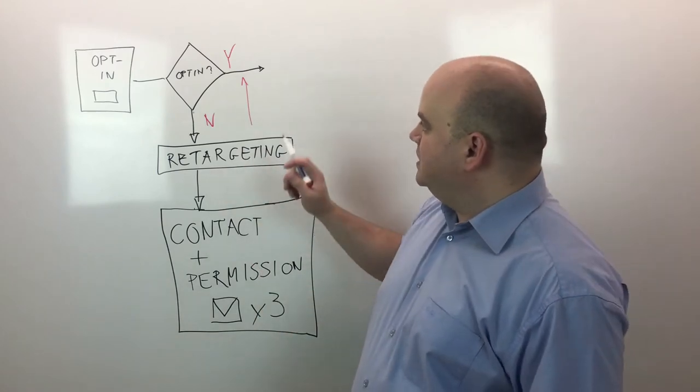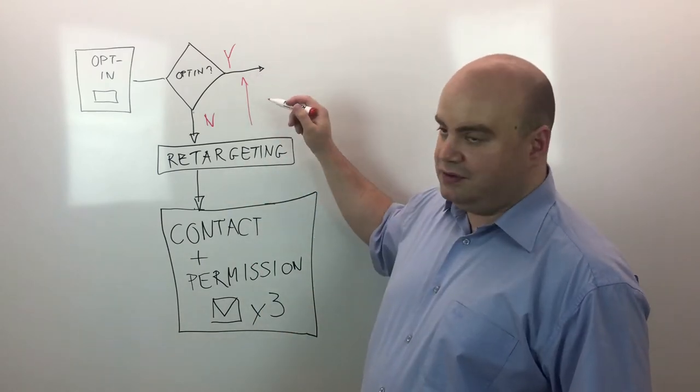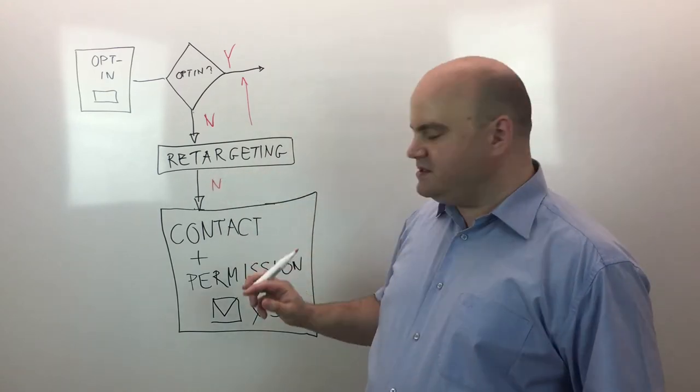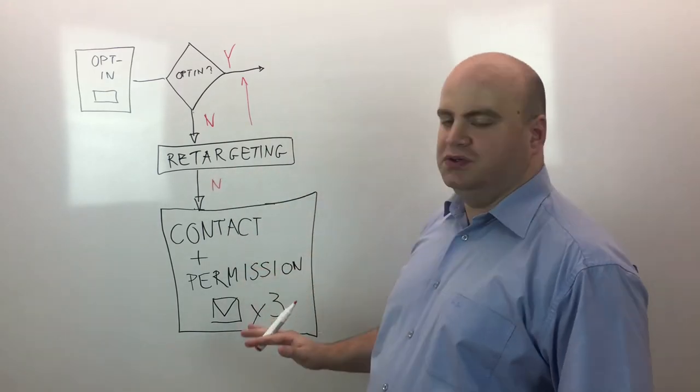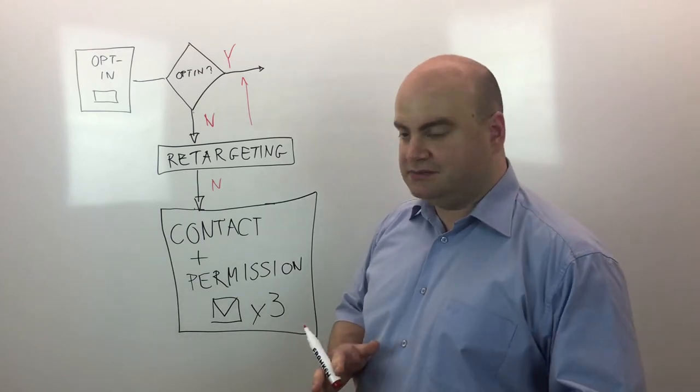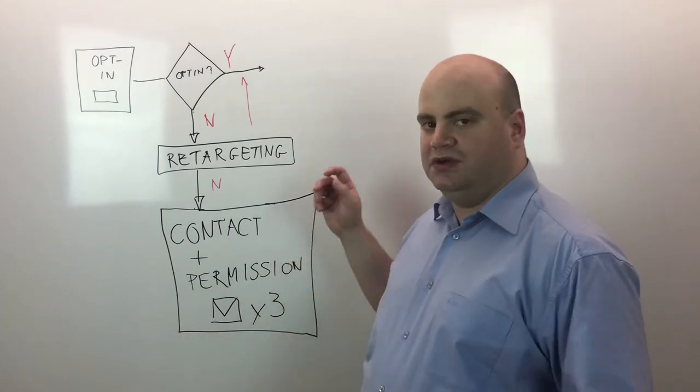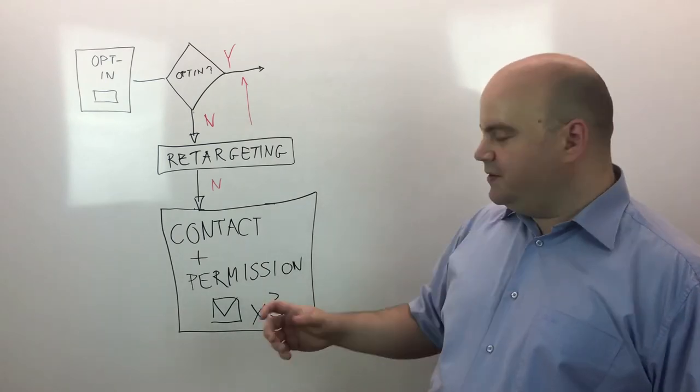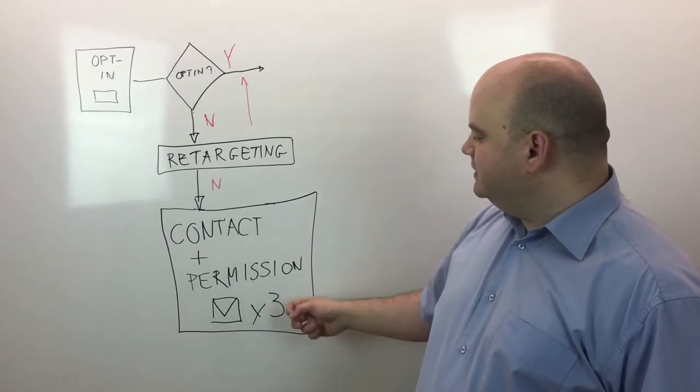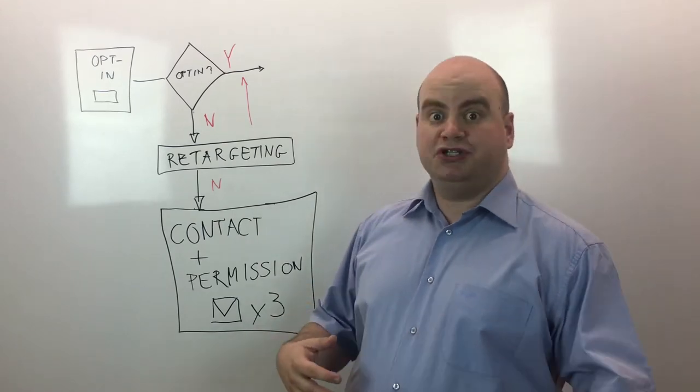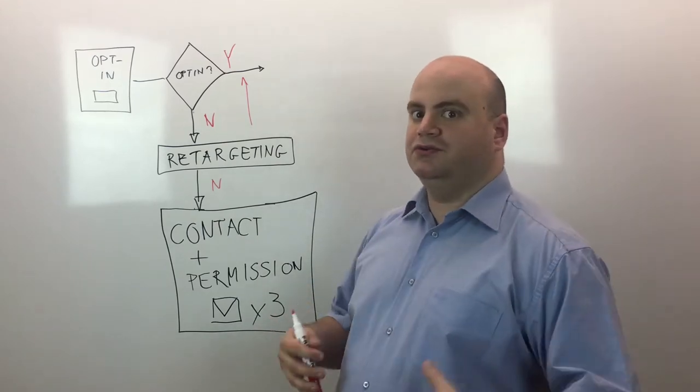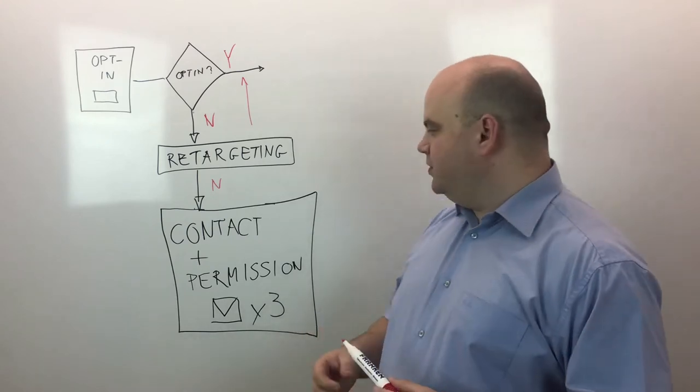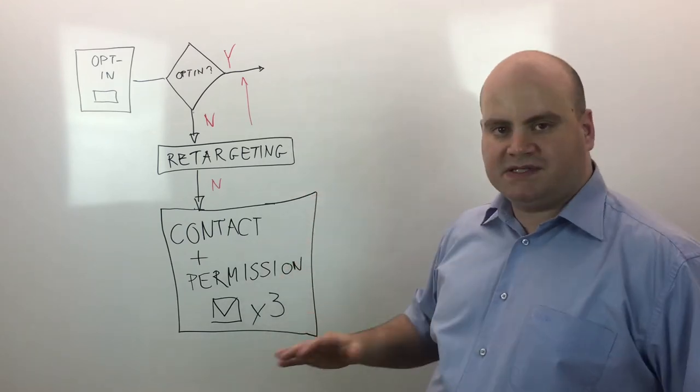The second step, if they didn't opt in after retargeting, then what you do? And this part will be especially useful if you're in B2B sales. Because in this case, I recommend to get a contact info for those particular company for some decision maker. So this is the first step. And the second step is to ask their permission to follow up or ask their permission to reach out to them and speak to them about your offers or about your business.